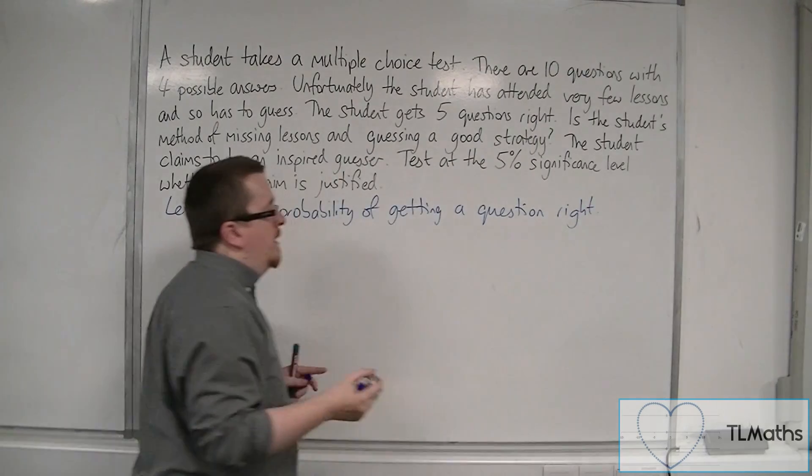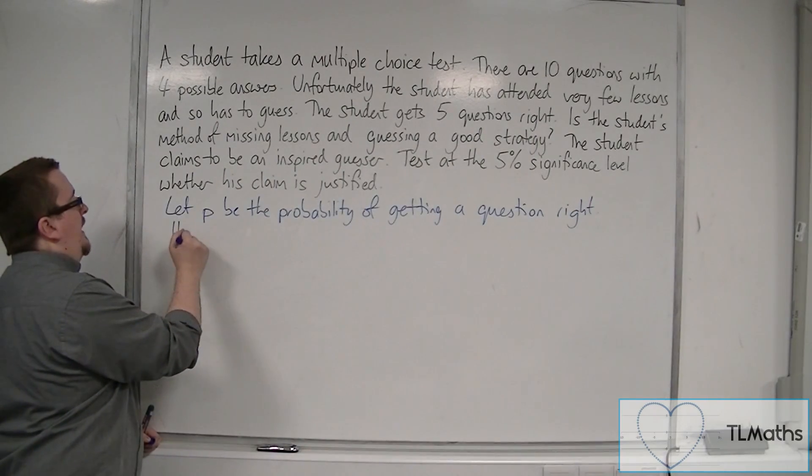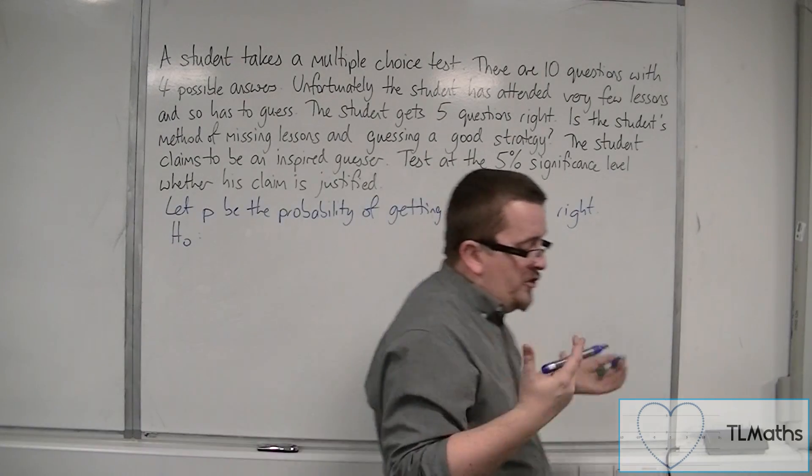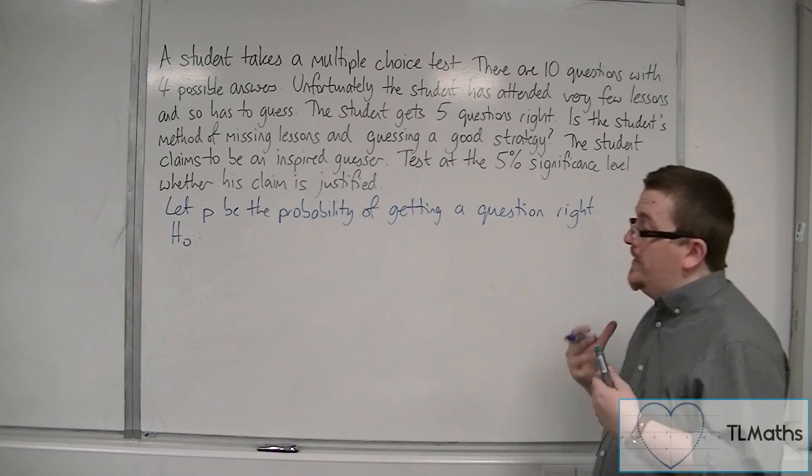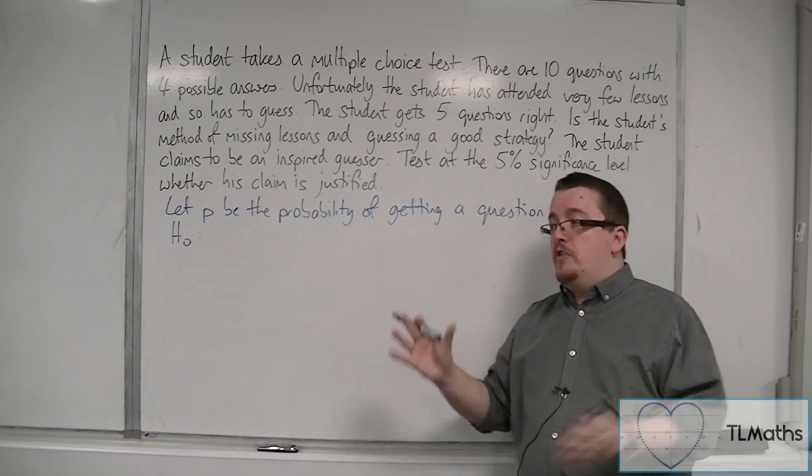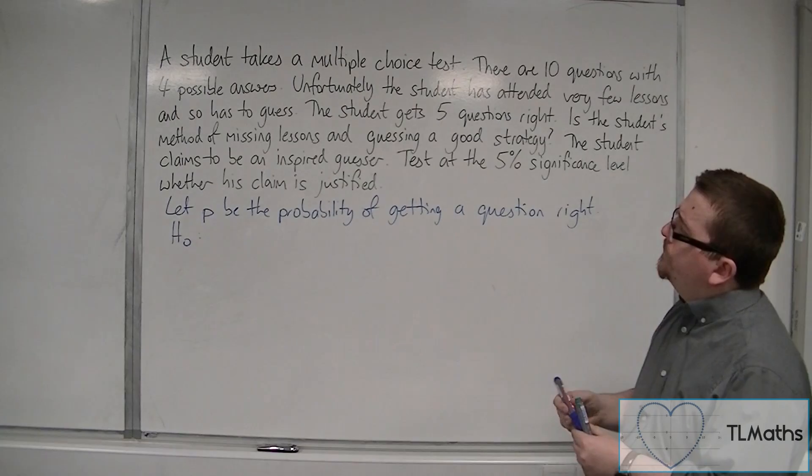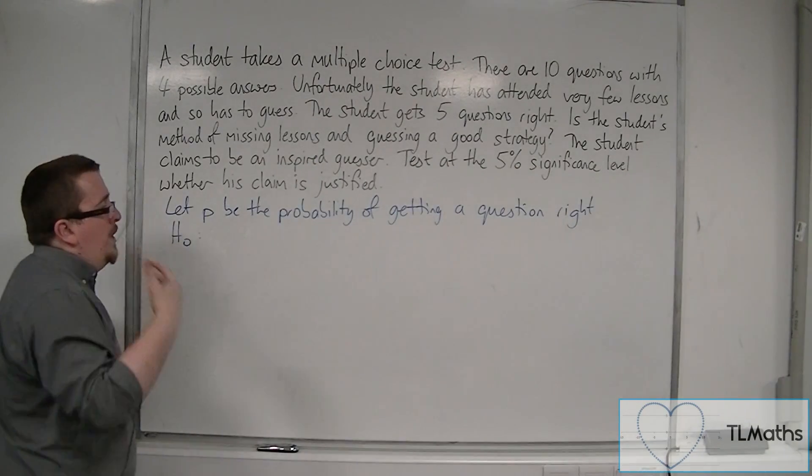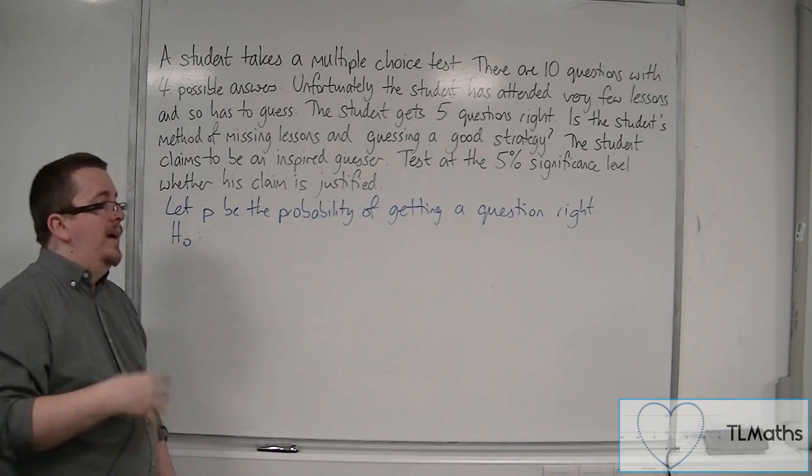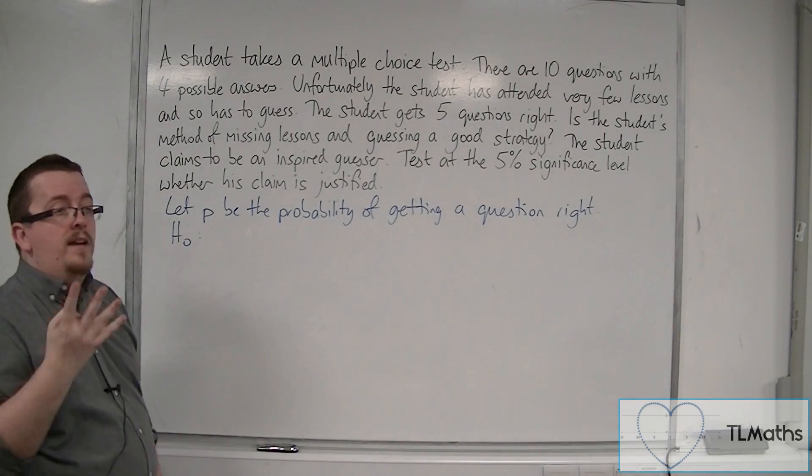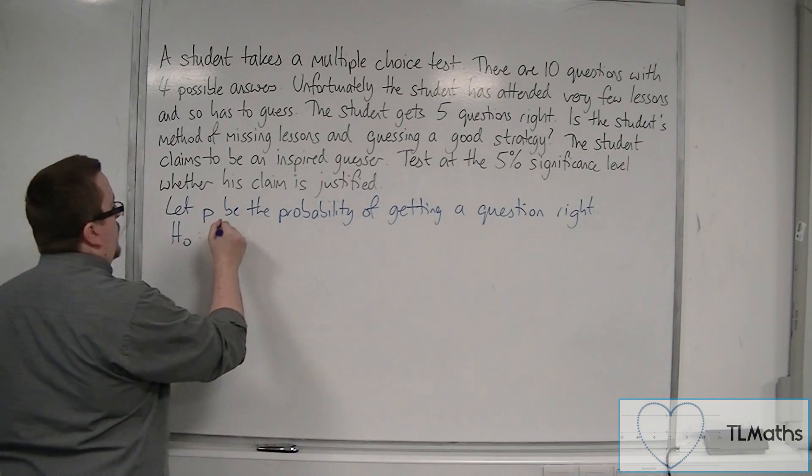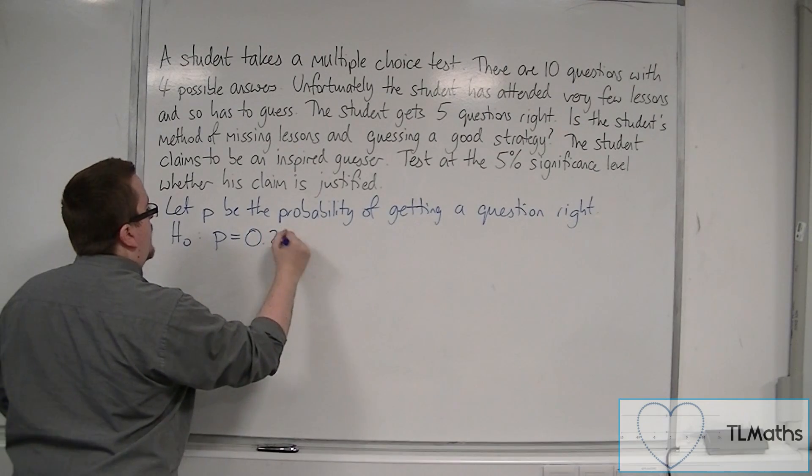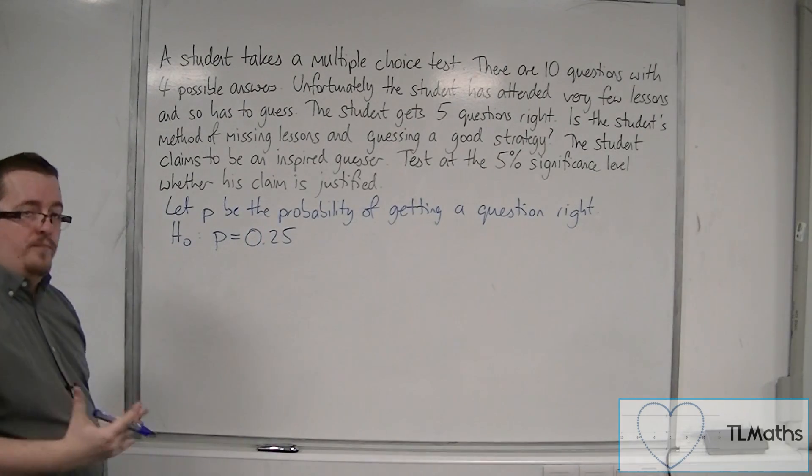Now because the student's going into this exam and outright guessing, knows none of the material and is just guessing. Since the question has four possible answers, it's a one in four guess. So we're going to put it at 0.25, or P equals 0.25. That's the devil's advocate position.